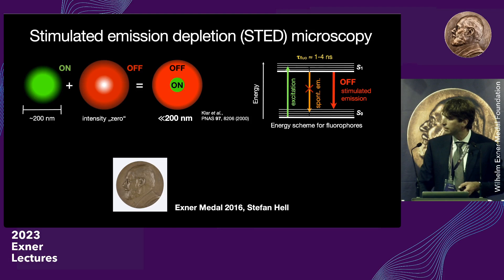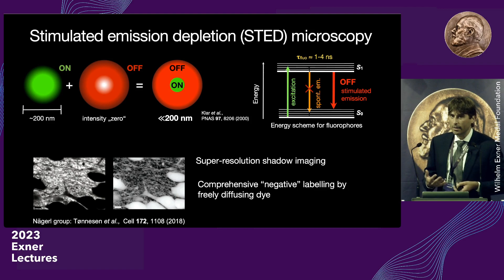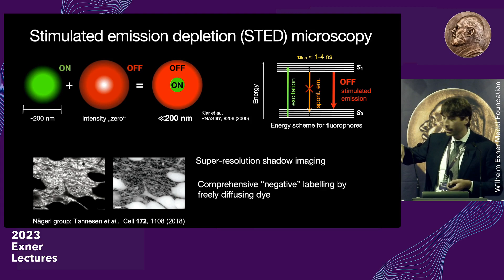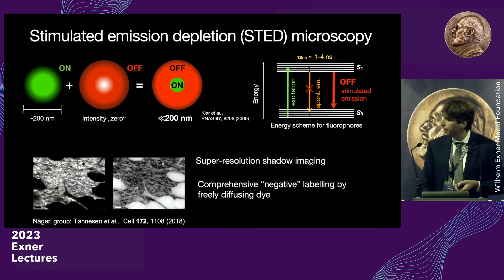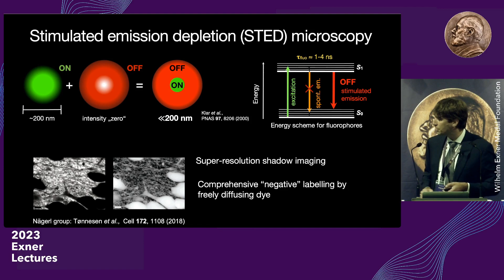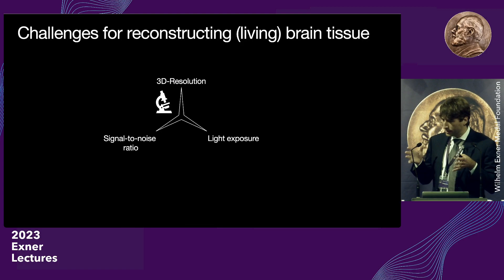With this, you can create a scenario where the region from which you actually read out the signal is much, much smaller than the original excitation spot, reaching into the nanoscale domain. We built on another technology: by simply pouring fluorescent molecules into the extracellular space, cells are visualized as negative shadows. When you read this out with STED microscopy, you see the individual cellular structures at very high definition — this is called super-resolution shadow imaging, developed by the Nägerl group in Bordeaux.